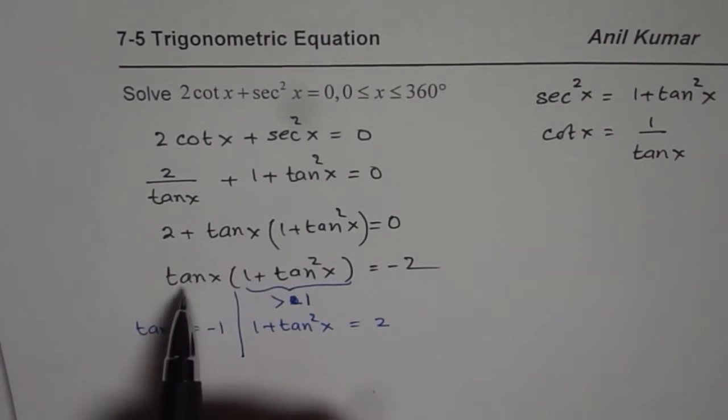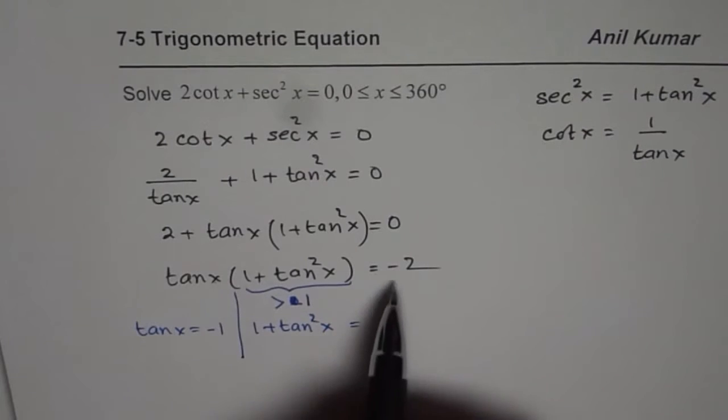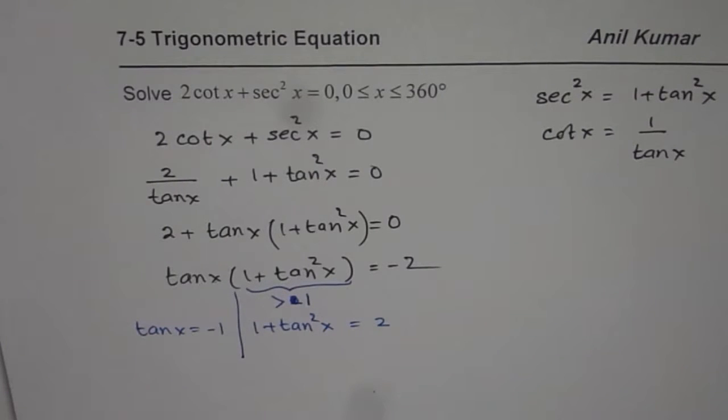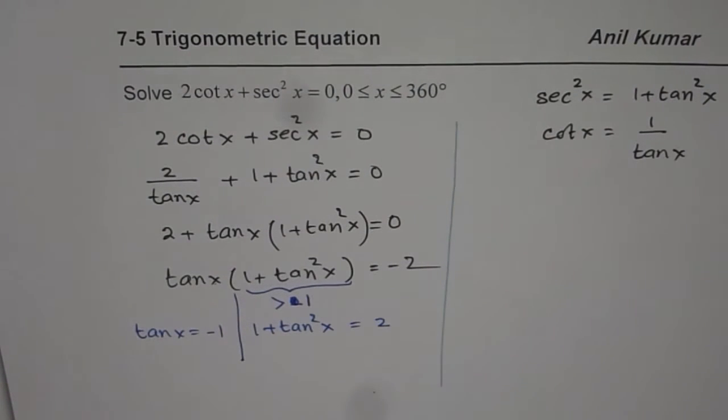So minus 2 we are looking for. So if I assume that tan x can be minus 1 and 1 plus tan square x is 2, when you multiply these two numbers you get minus 2. So that is the kind of solution which we are bringing together to find all possible solutions in the given domain.